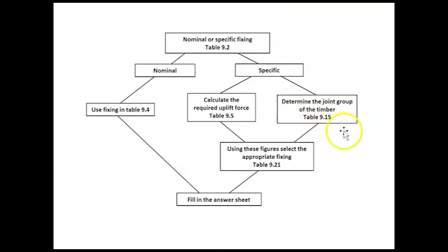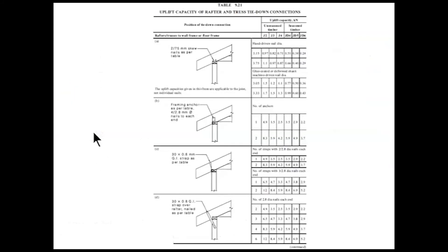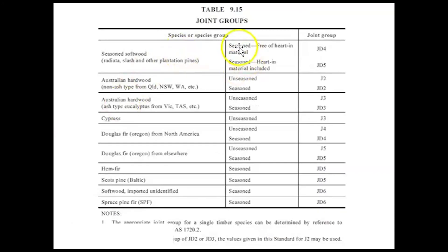All right, what is next? Let's go back to our flowchart. The other thing we need to work out is the joint group of the timber, so that we know how well that timber will hold on to the nails or screws or whatever they end up being. So we need Table 9.15 for that. All right, let's find Table 9.15. Here we are here. So you'll notice joint groups are always J groups. They're either J or JD. D stands for dry. You'll notice anywhere it says seasoned, it's a JD with a number. If it's unseasoned, it's J with a number. All right, so D for dry, meaning seasoned.